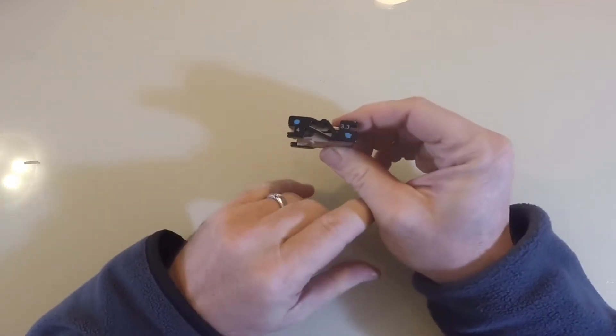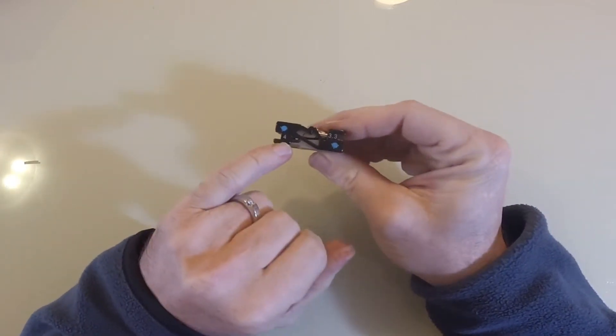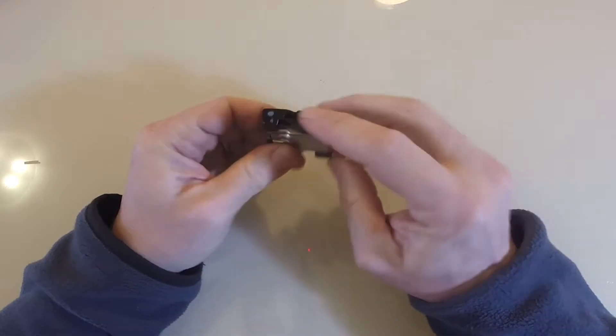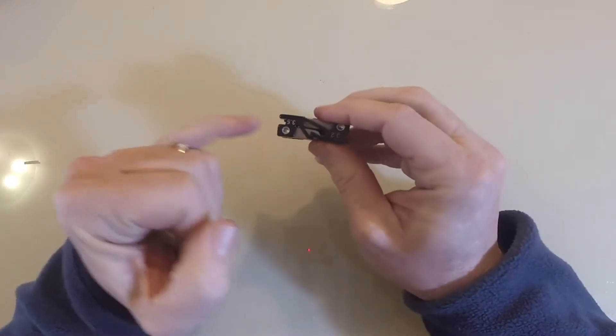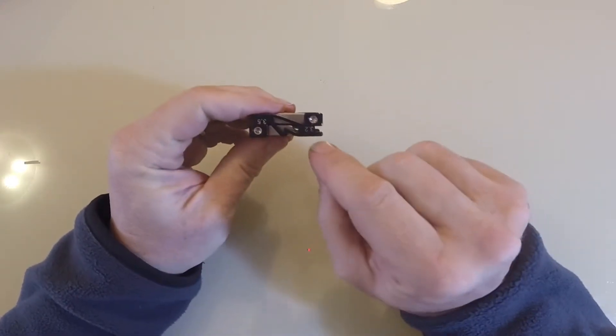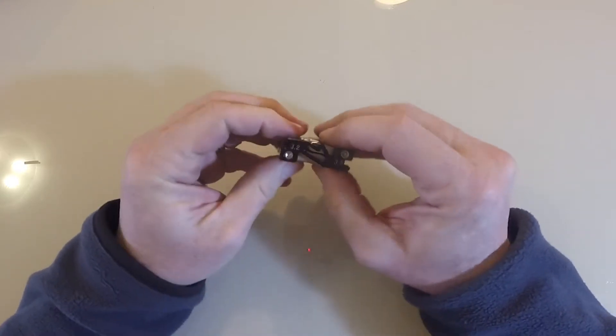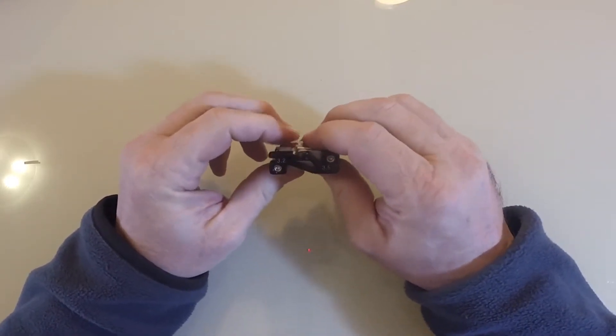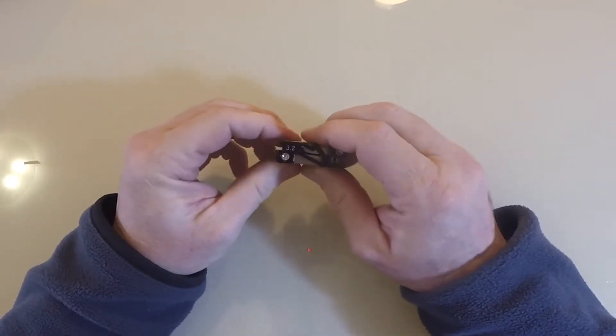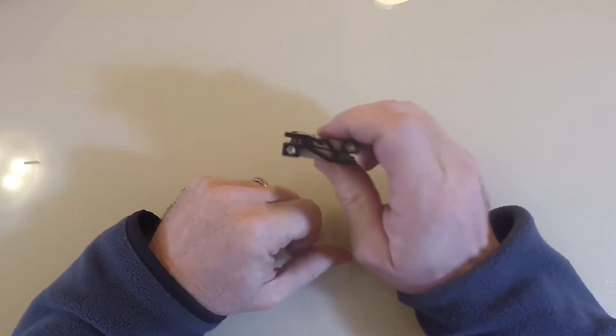And then on the sides we have four different spoke tools. It's usually better in my opinion to use a proper spoke wrench, but if you have concerns about carrying a lot of stuff and you've really got to pare things down, that's what this is designed for.